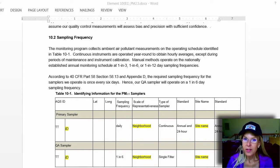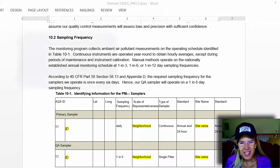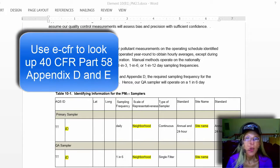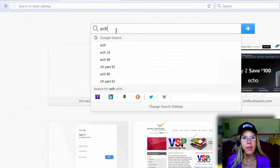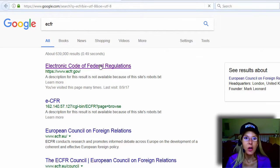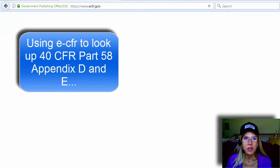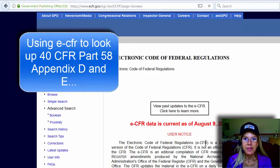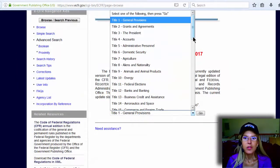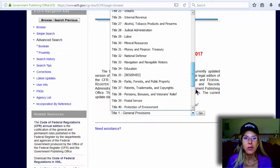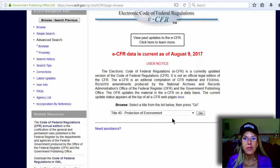So that is described in 40 CFR Part 58 Appendix D and E. Let's look that up. Let's type in eCFR and go to the Electronic Code of Federal Regulations and look up this scale of representativeness. So here we've got the titles. We know it's 40 CFR. So we go down to 40, which is Protection of the Environment.